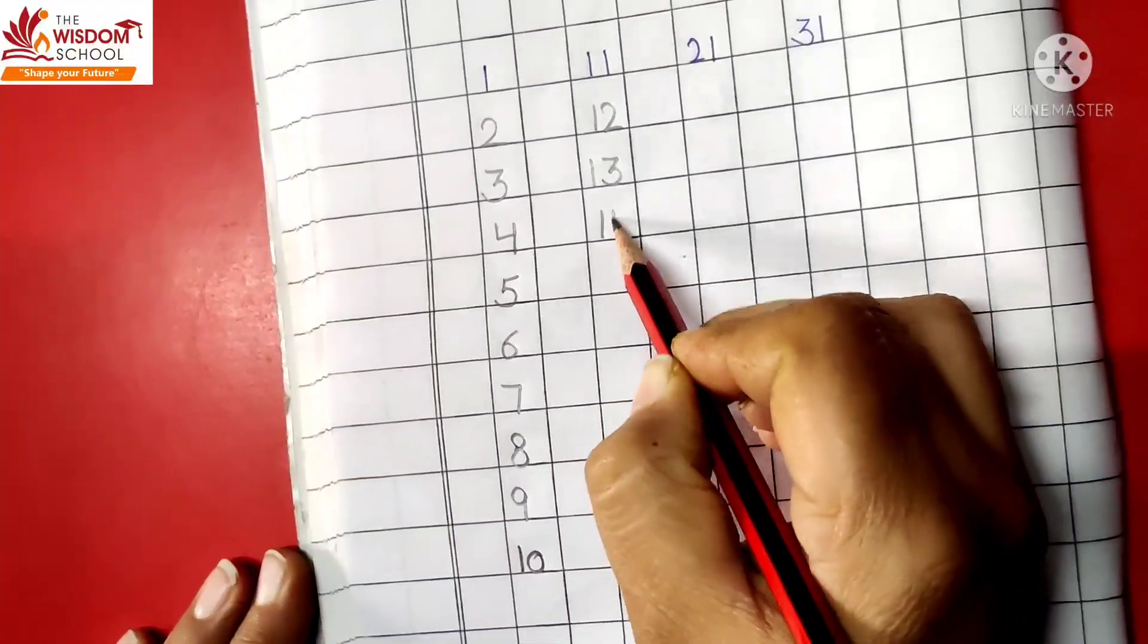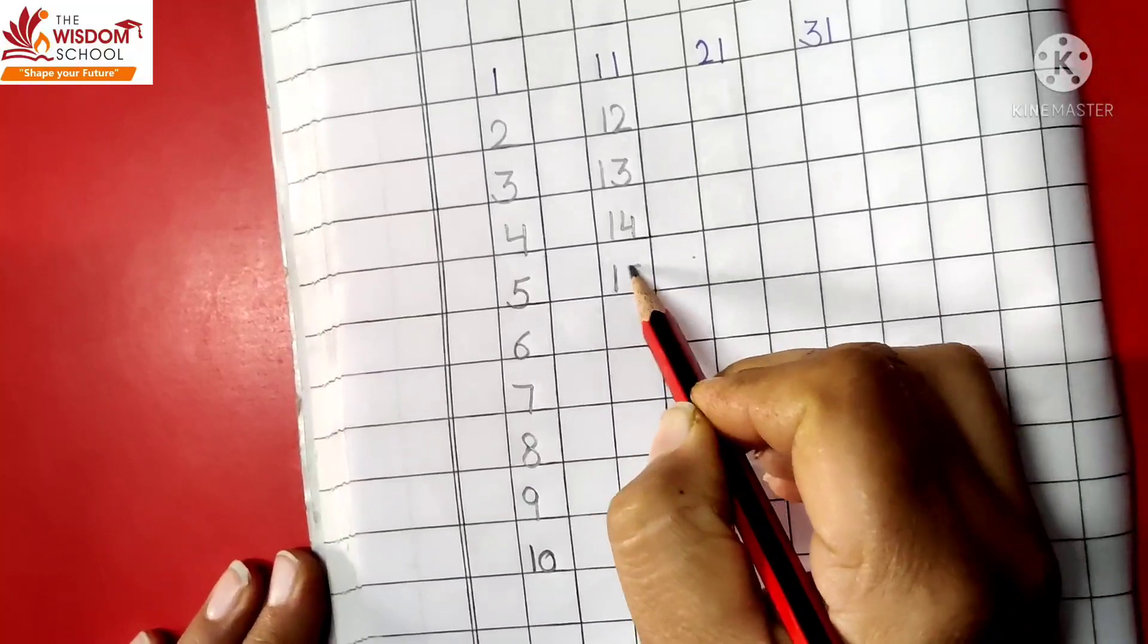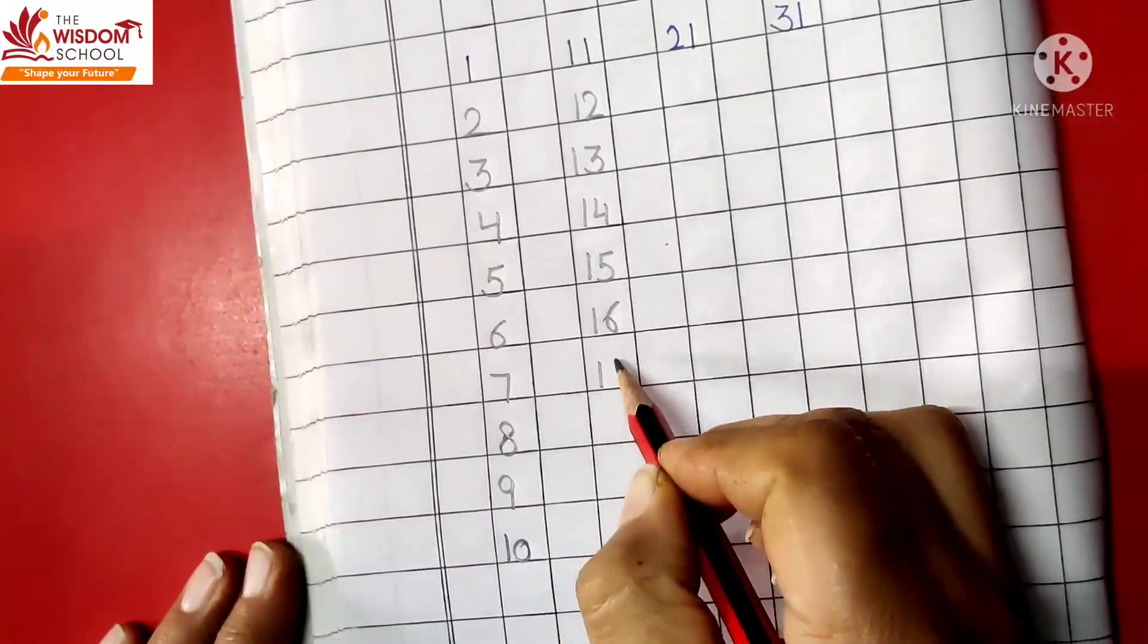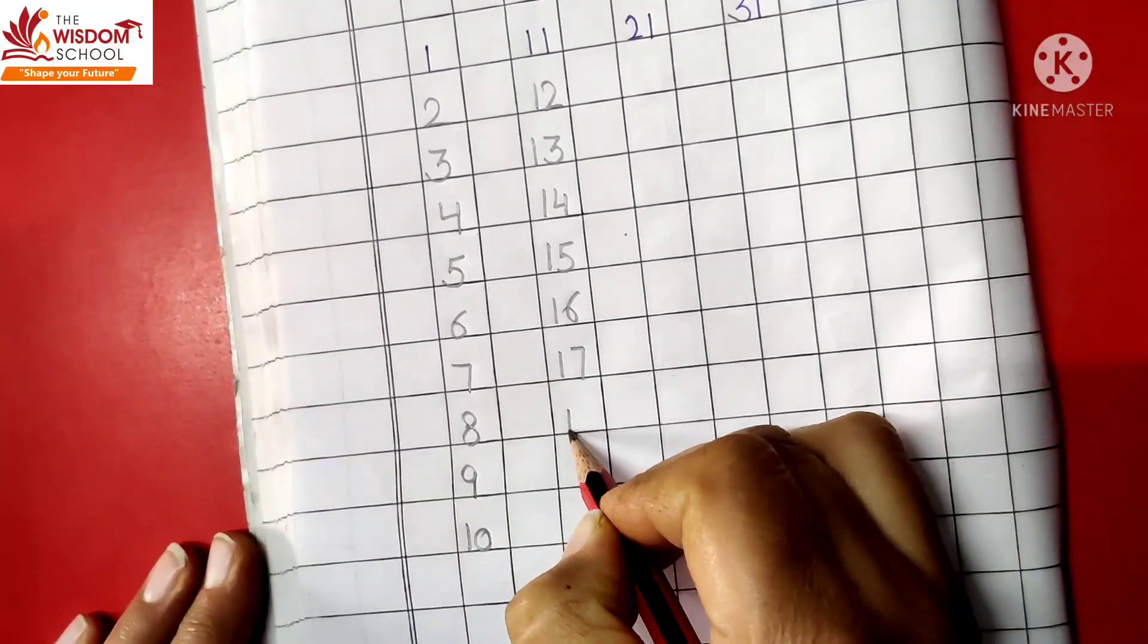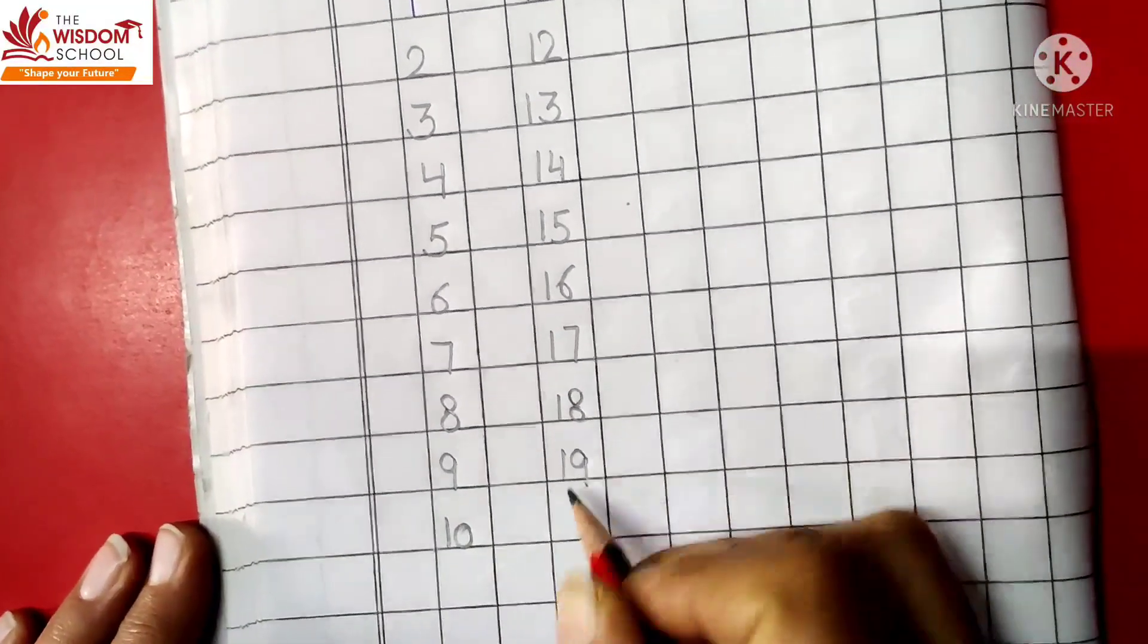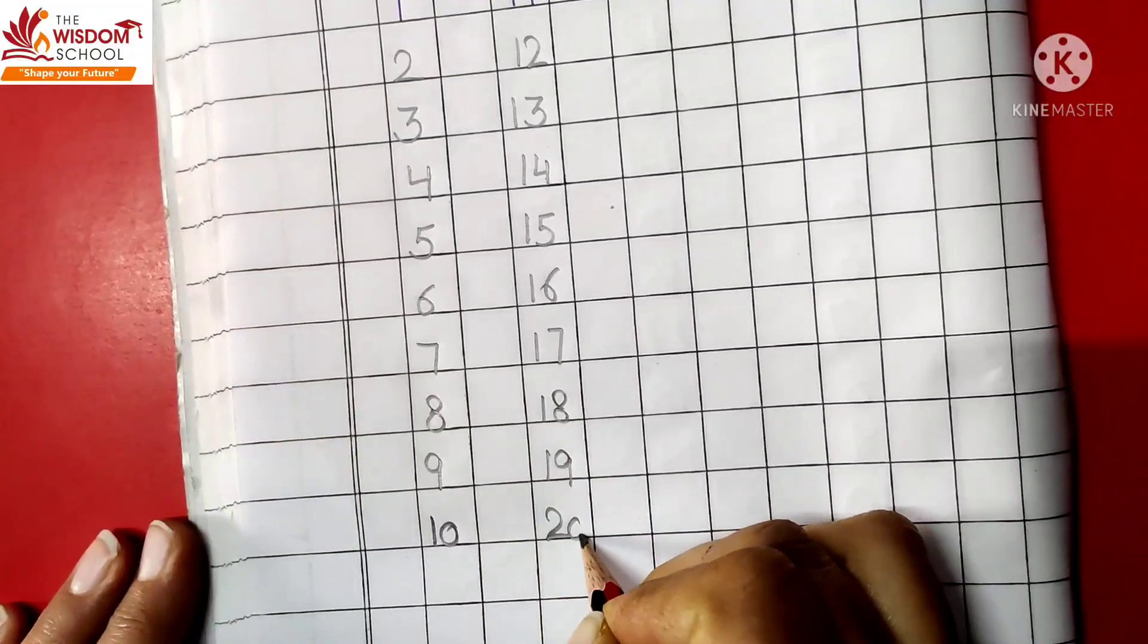Now we will do counting 1 to 40. 1, 11. 1, 2, 12. 1, 3, 13. 1, 4, 14. 1, 5, 15. 1, 6, 16. 1, 7, 17. 1, 8, 18. 1, 9, 19. 2, 0, 20.